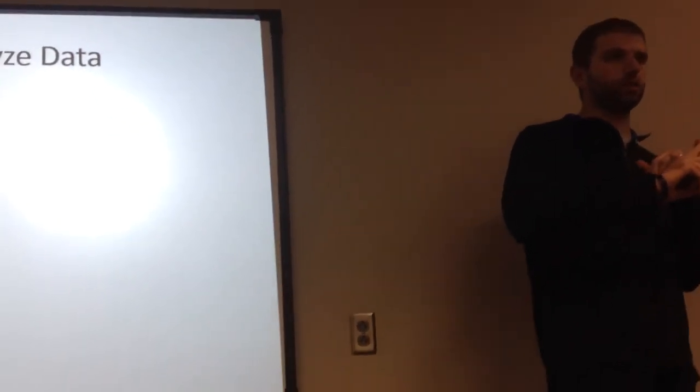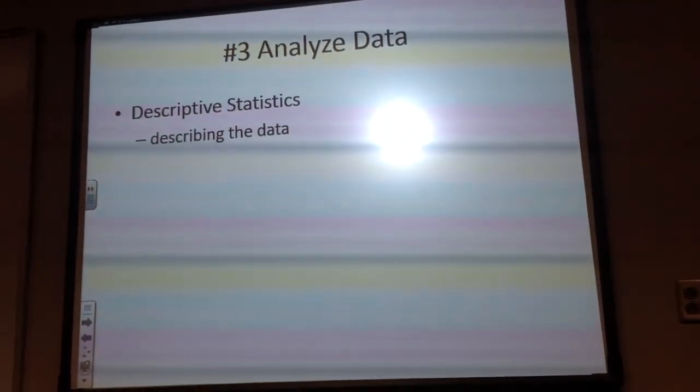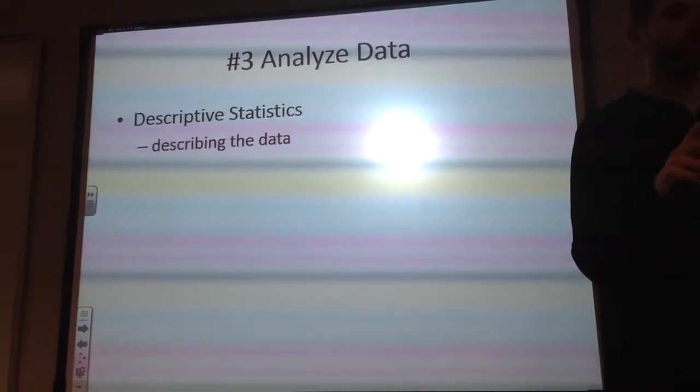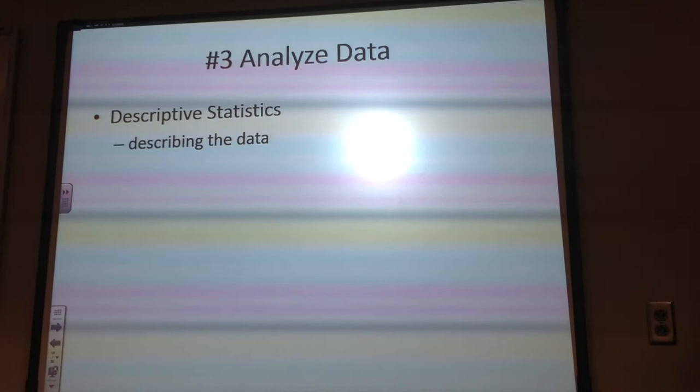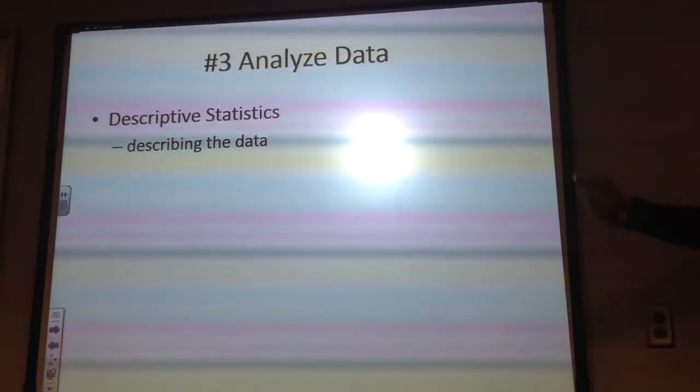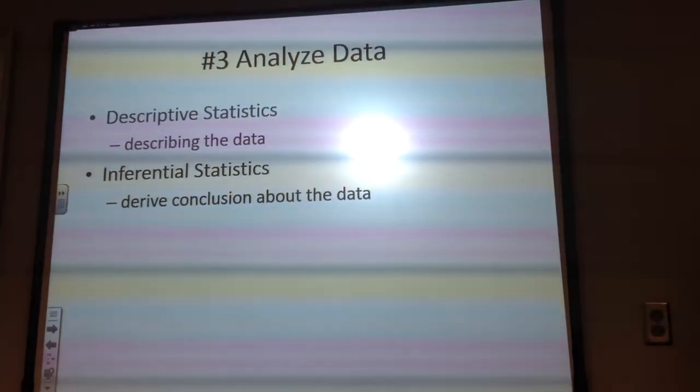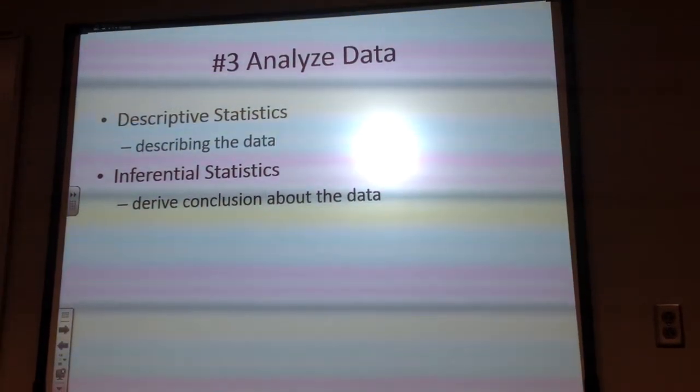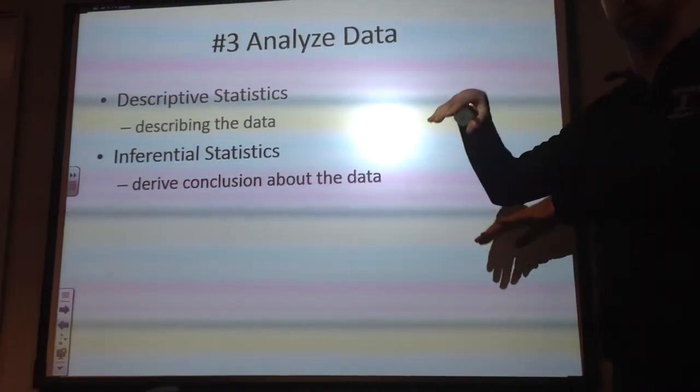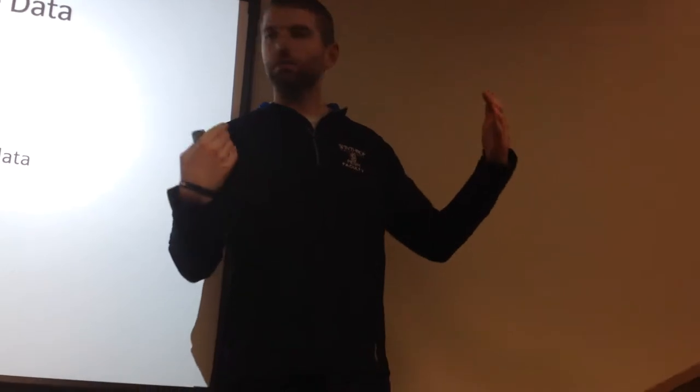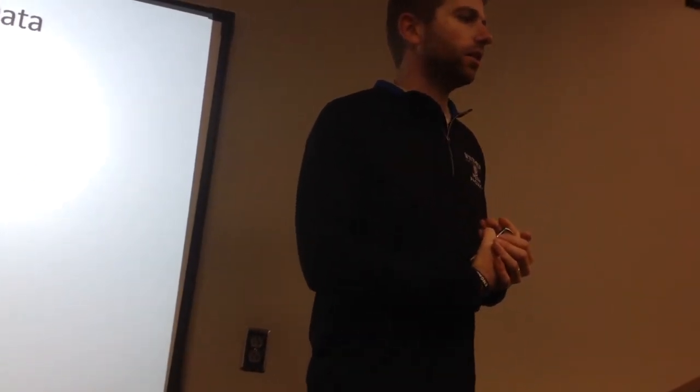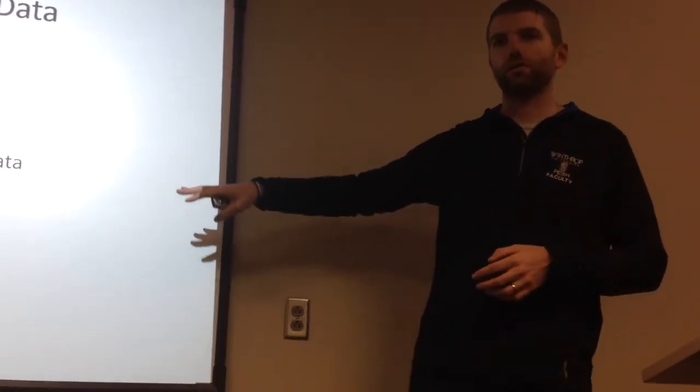So descriptive statistics is the first type of statistics we're going to look at. And this is something you've probably worked on before you've read. These are the things that are really easy to understand. This is describing the data, such as height of your players, the age of your players, the free throw percentage of your players, whatever it is to just describe what it is, the average age. So just what does your data look like? You're kind of painting a picture. So that's describing your data. That's descriptive statistics.